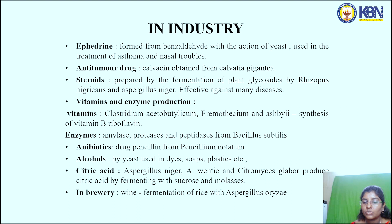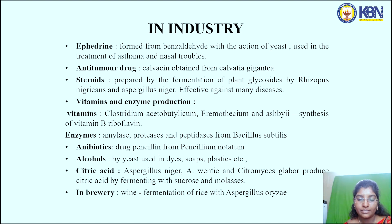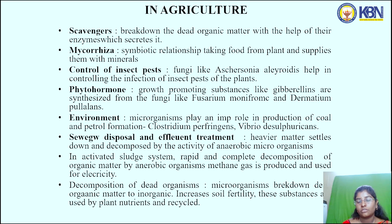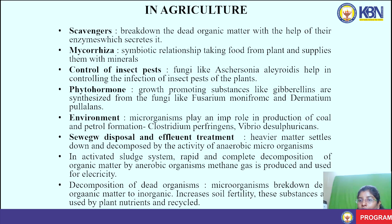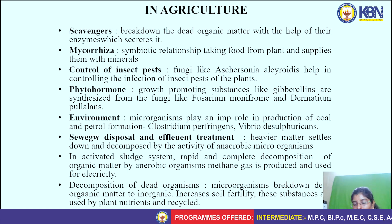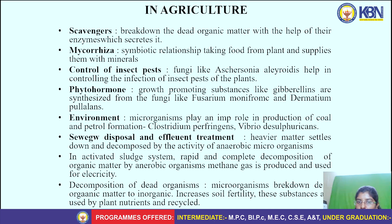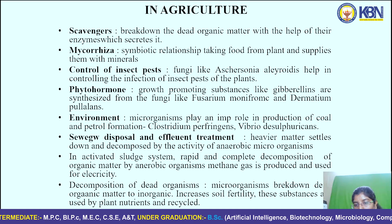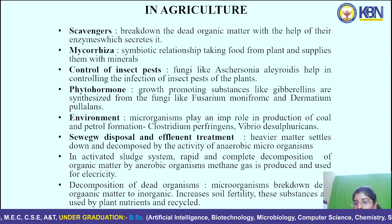Aspergillus niger, Aspergillus ventia, and Citromyces glaber produce citric acid by fermenting with sucrose and molasses. In the brewery industry, wine is a fermented product — wine fermentation of rice uses Aspergillus oryzae. In agriculture, microorganisms act as scavengers by breaking down dead organic matter into inorganic matter. Mycorrhizae have a symbiotic relationship with plants, supplying them with minerals. Fungi like Aschersonia aleyrodis help in controlling insect pest infections on plants.